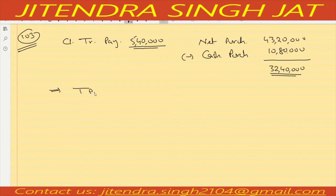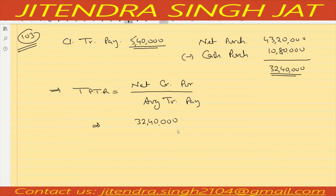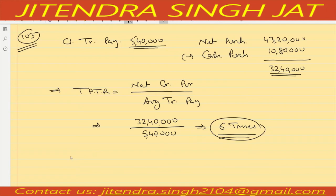Trade payable turnover ratio equals net credit purchase upon average trade payable. Net credit purchase is 32 lakh 40,000 and closing trade payable 5 lakh 40,000 is considered as average trade payable. So 32 lakh 40,000 divided by 5 lakh 40,000 equals six times. Trade payable turnover ratio and trade receivable turnover ratio are similar in calculation — only the figures differ.